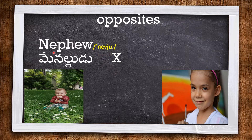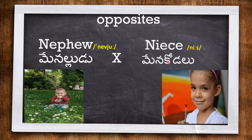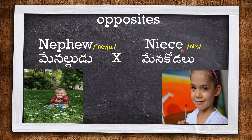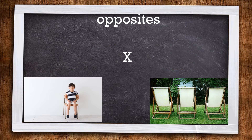NEPHEW refers to your brother's or sister's son. And NIECE refers to your brother's or sister's daughter. Nephew and niece are opposites of each other. Got it? Next, we move on.